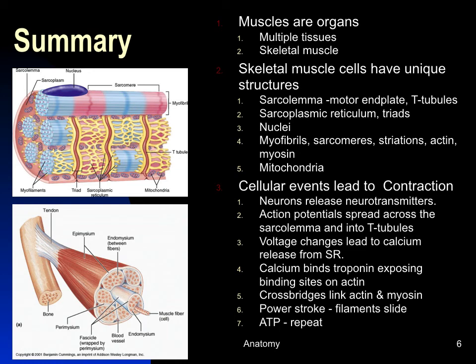Skeletal muscle cells or fibers have unique structures: the sarcolemma, t-tubules, sarcoplasmic reticulum, and their association forming triads. They have myofibrils with sarcomere striations. We know the events that lead to contraction — at the motor end plate, through excitation-coupling, and the interaction between actin and myosin. We'll talk more about contraction, energy, and responses of whole muscles in upcoming programs.